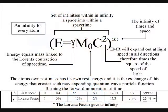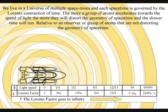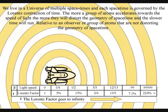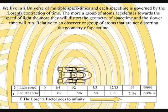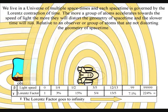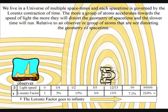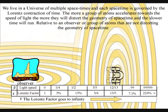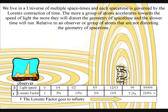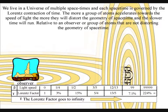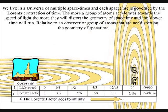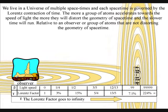We therefore live in a universe of multiple space-times, and each space-time is governed by the Lorentz contraction of time. As the twin accelerates towards the speed of light, it will distort the geometry of its own space-time, and time will run slower relative to the twin that stayed at home and is not accelerating. This is because an increase in energy or mass will increase the number of photon-electron couplings, and there is a delay factor for each photon-electron coupling.